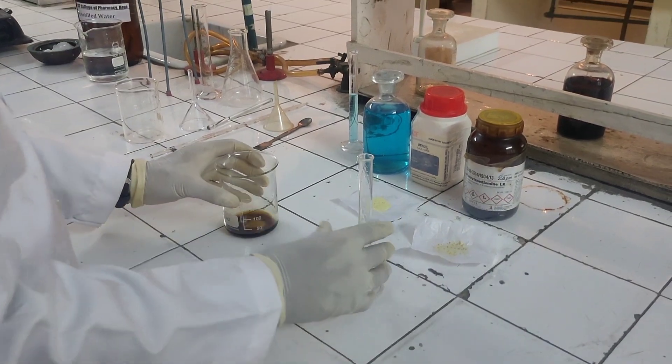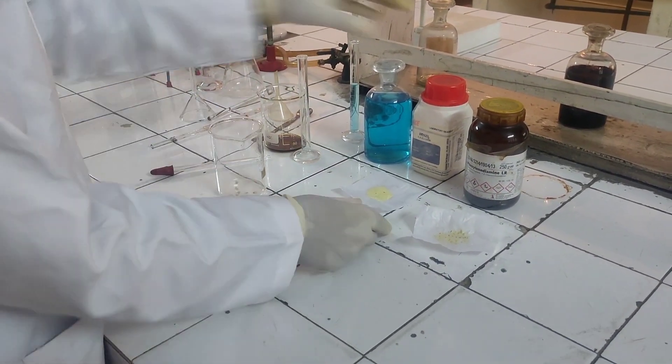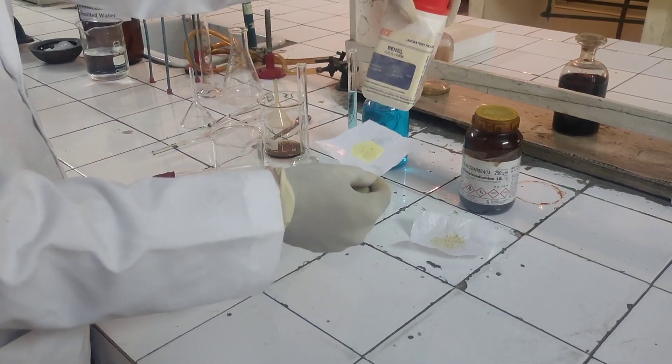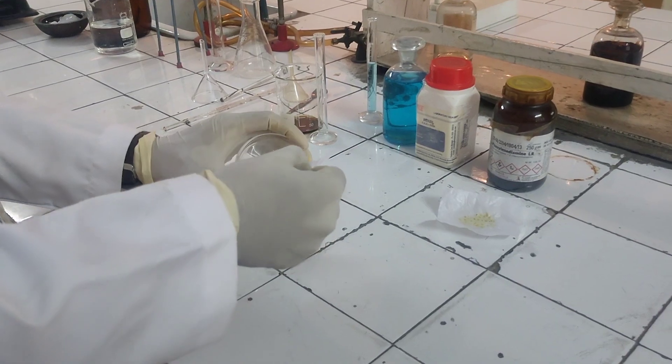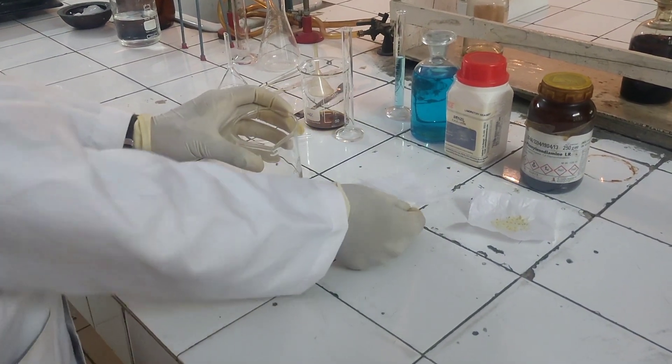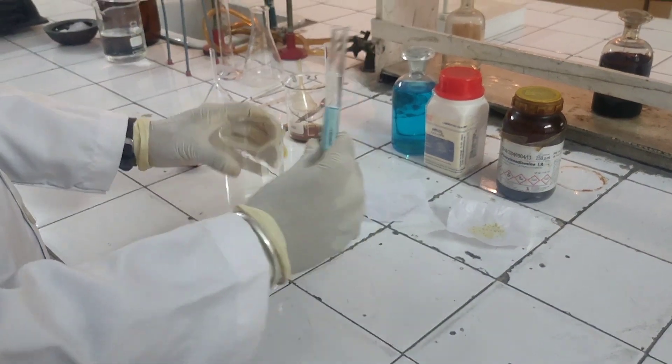Now the second step is take 2.2 gram of benzil and transfer it into the beaker. After that mix with 8 ml of rectified spirit.